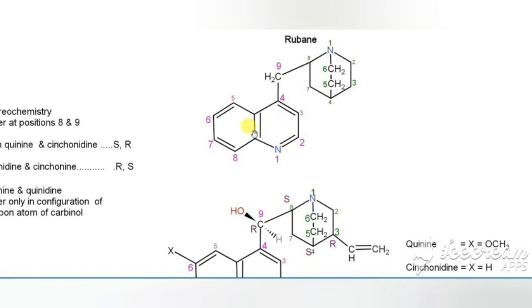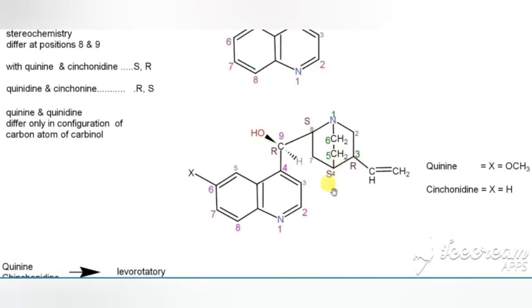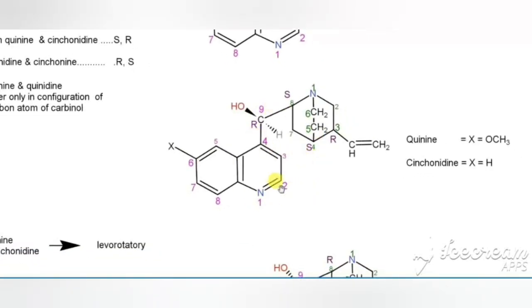Rubane has two moieties — one is quinoline and another is quinuclidine — connected by methylene. In the quinine structure, the sixth position of the quinoline has a methoxy group. If it has methoxy, it is called quinine; if the methoxy is replaced by hydrogen (desmethoxy), it is called cinchonidine. That is why cinchonidine is the desmethyl derivative of quinine.